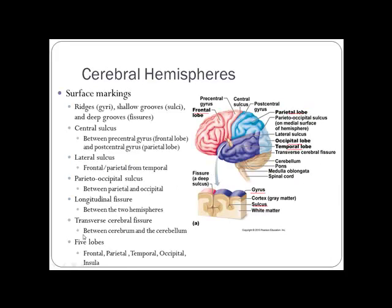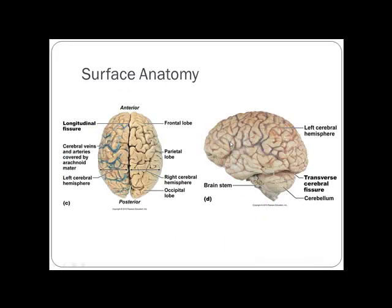The five lobes are the frontal lobe, parietal lobe, occipital lobe, temporal lobe, and the insula. The central sulcus divides the frontal from the parietal lobe. The occipital lobe is in the back, and the temporal lobe is lateral. The transverse fissure separates the cerebellum from the cerebrum.